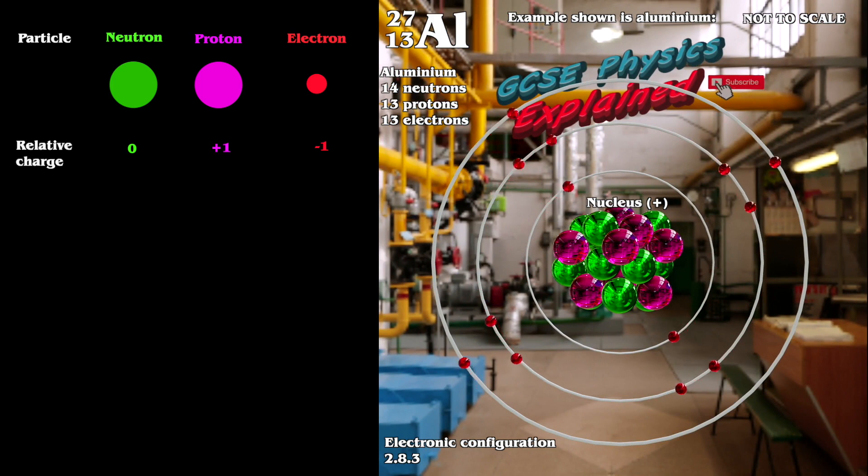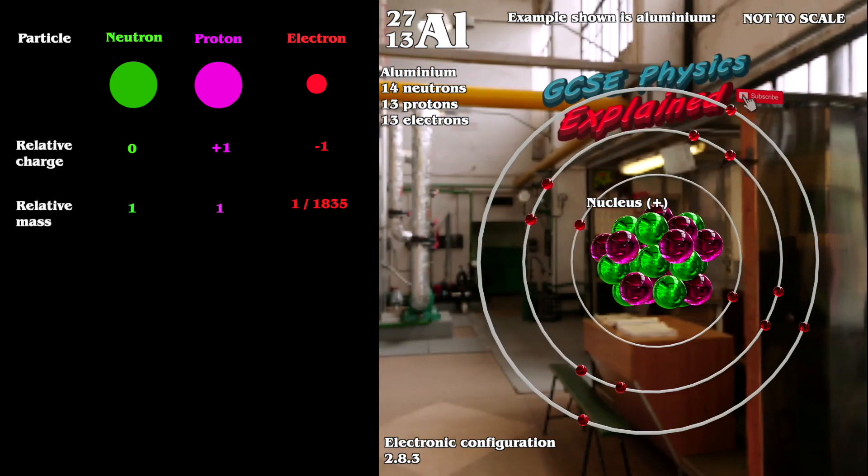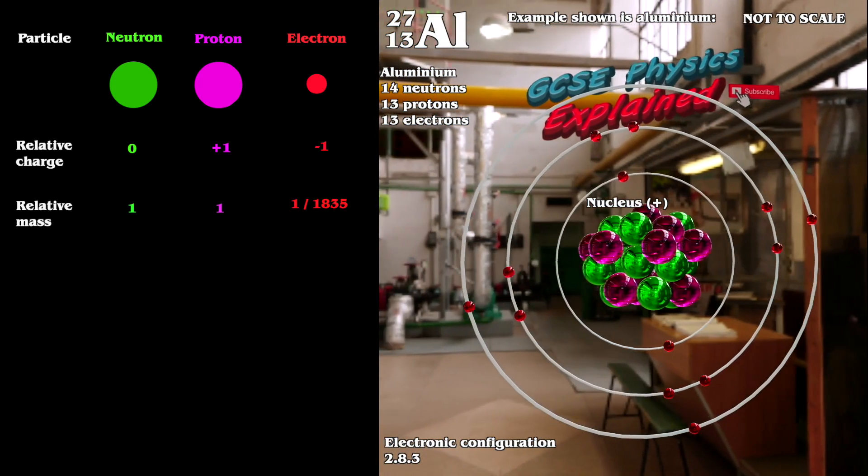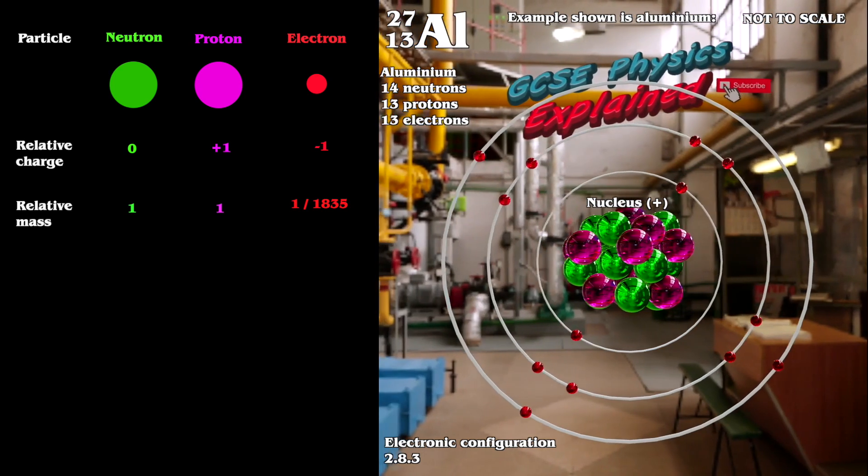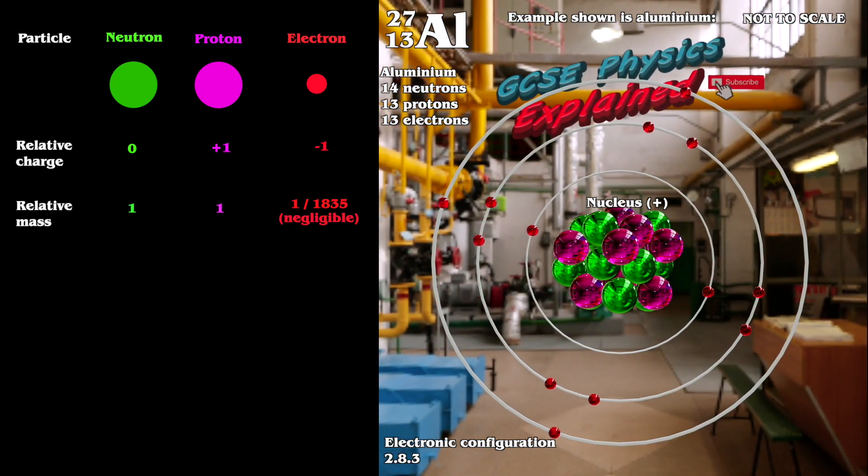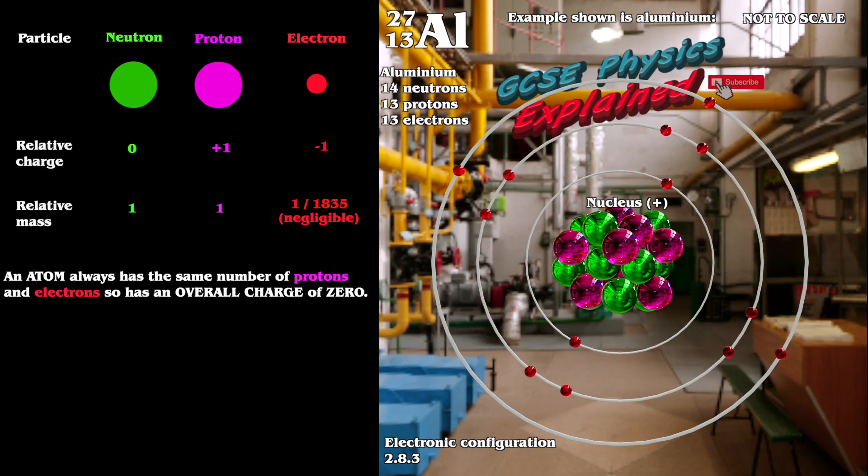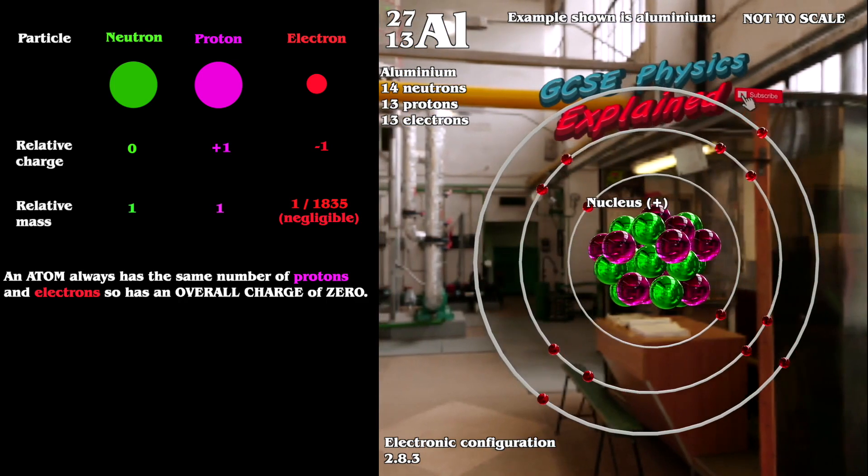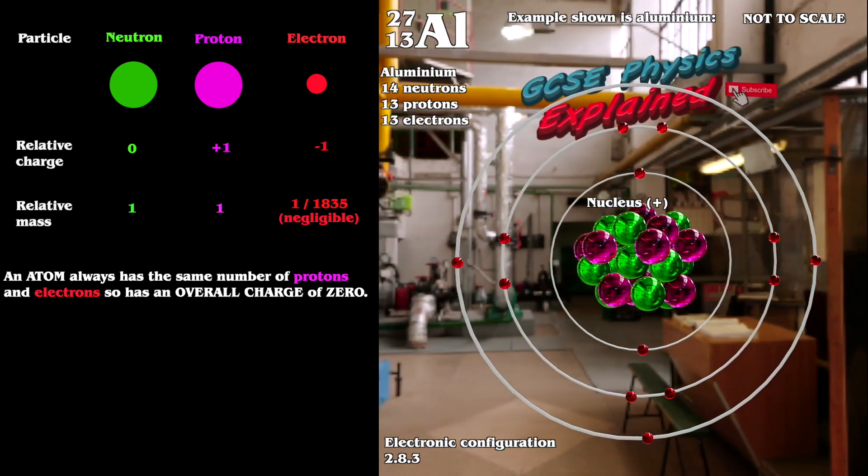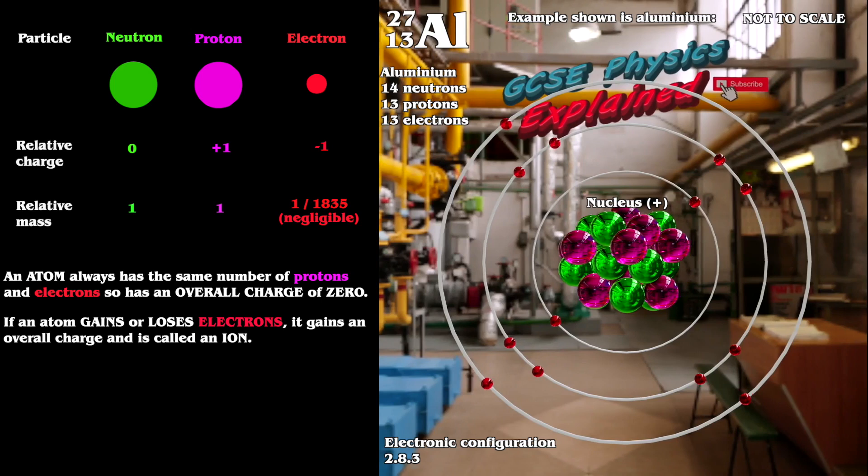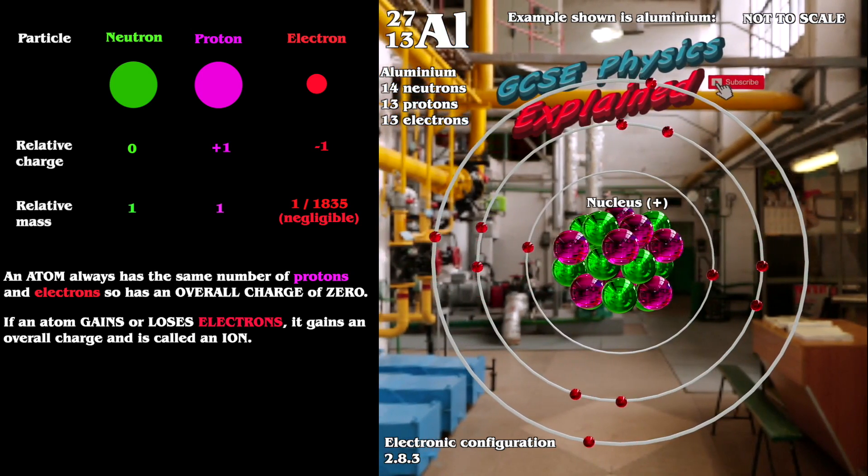Protons and neutrons each have a relative mass of 1. The relative mass of an electron is nearly 2,000 times lighter, so we usually say its mass is negligible. An atom always has the same number of protons and electrons, so it has an overall charge of zero. If an atom gains or loses electrons, it gains an overall charge and is called an ion.